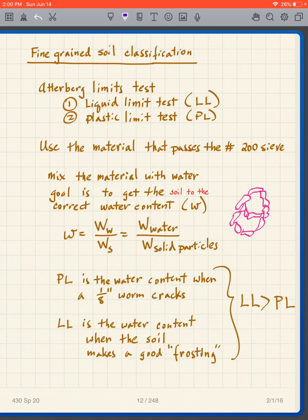To get the soil dry, you simply put it in an oven. The wet weight is what you have when running the test; the dry weight is obtained after oven drying. From those two values you calculate the water content.